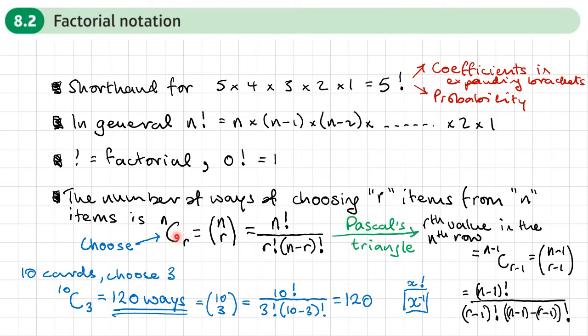Now, if we're going to link up this new notation here to Pascal's triangle, we can use this to find the numbers, any number in Pascal's triangle. So if I go down to the nth row and I go to the rth value, so I go to a certain value across, then I can use this to work it out.